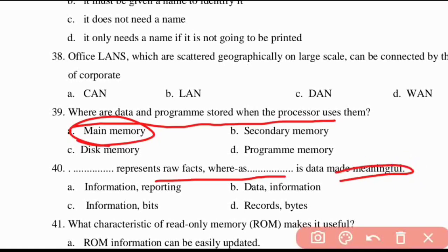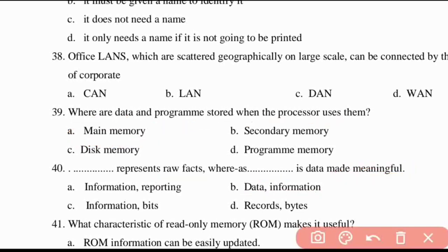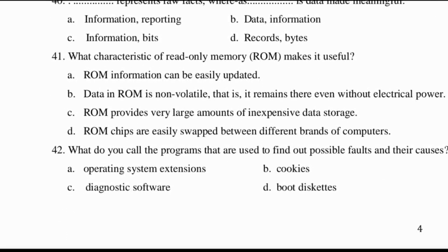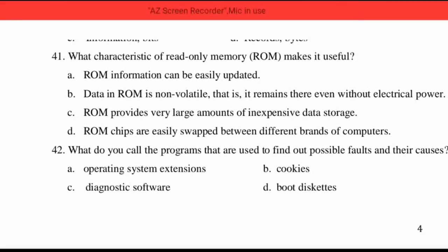Fortieth question: dash represents the raw facts whereas dash is data made meaningful. The answer is Option B — data represents raw facts whereas information is data made meaningful.